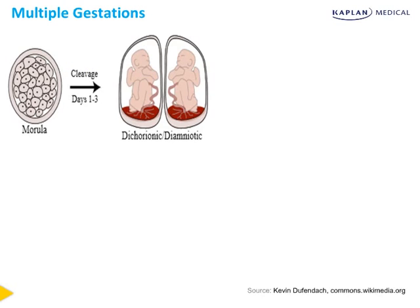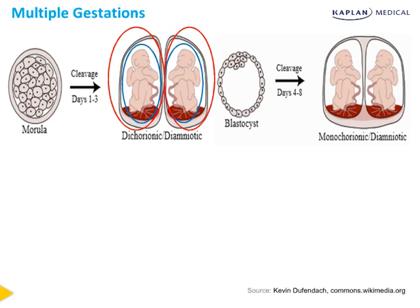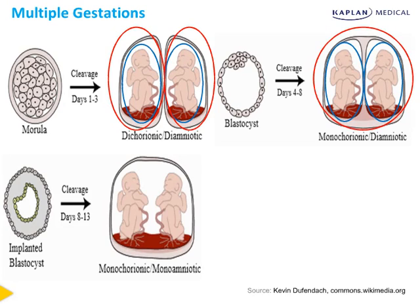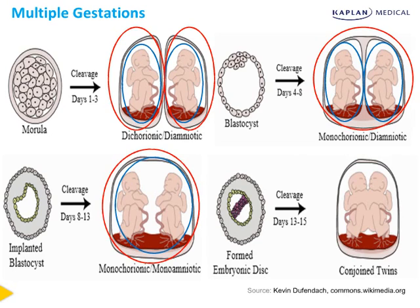If cleavage occurs on days one through three, we end up with a dichorionic-diamniotic twin pregnancy, with each twin having their own amniotic sac and their own placenta. When cleavage occurs on days four through eight, we get a monochorionic-diamniotic twin pregnancy, with each twin having their own amnion but sharing a placenta. When cleavage occurs on days eight through 13, we get a monochorionic-monoamniotic twin pregnancy, occurring in only 1% of monozygotic twins, where fetuses share both an amnion and a placenta. When cleavage occurs on days 13 through 15, we end up with conjoined twins, both in the same sac and sharing a placenta.